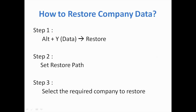Next, how to restore the company data. Suppose you have taken the backup and the original data gets lost, or you have taken the backup in your pen drive and want to open the same file — the same company — on another PC. In that case, you have this backup file and we will restore it — open the file in Tally. First, go to Alt-Y, Data menu and select Restore. Set the restore path, select the companies to get restored, and press Enter. It's very easy.